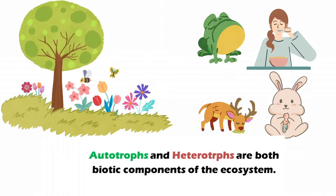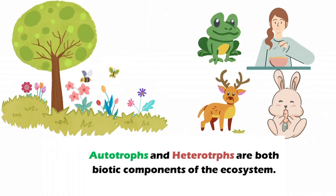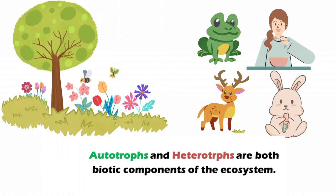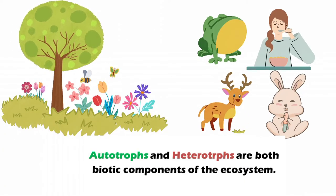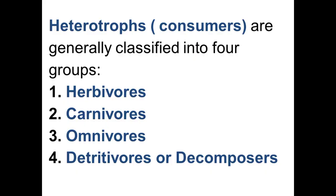Autotrophs and heterotrophs are both biotic components of the ecosystem. Heterotrophs, or consumers, are generally classified into four groups: herbivores, carnivores, omnivores, and detritivores or decomposers.